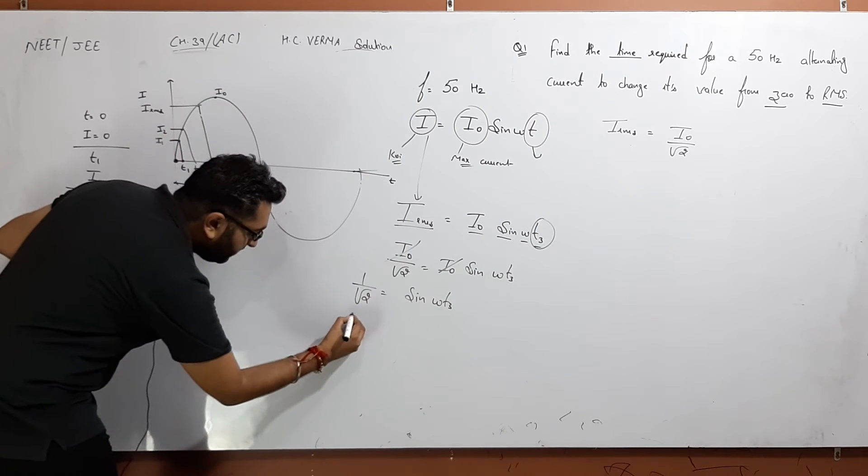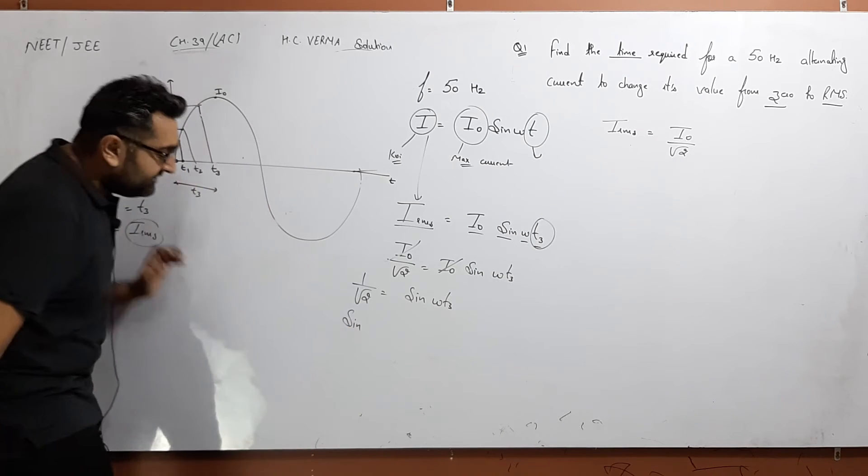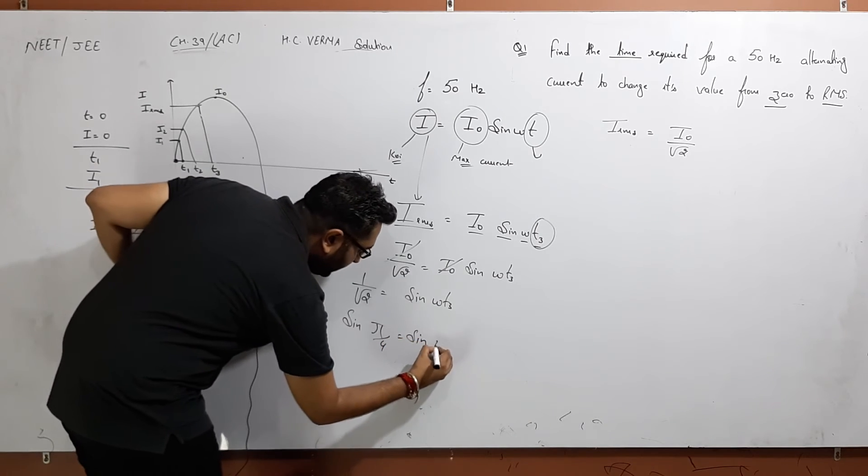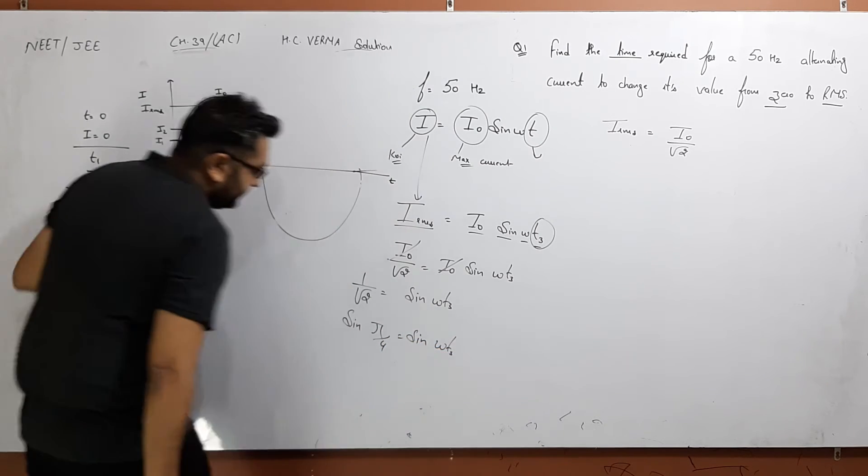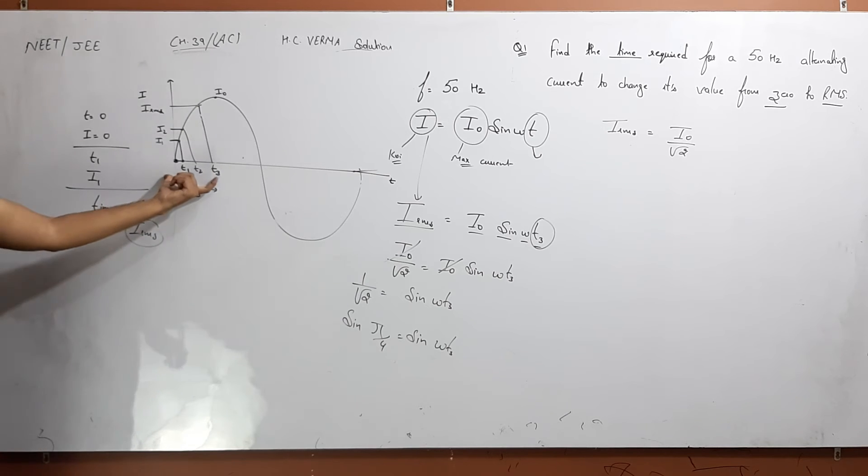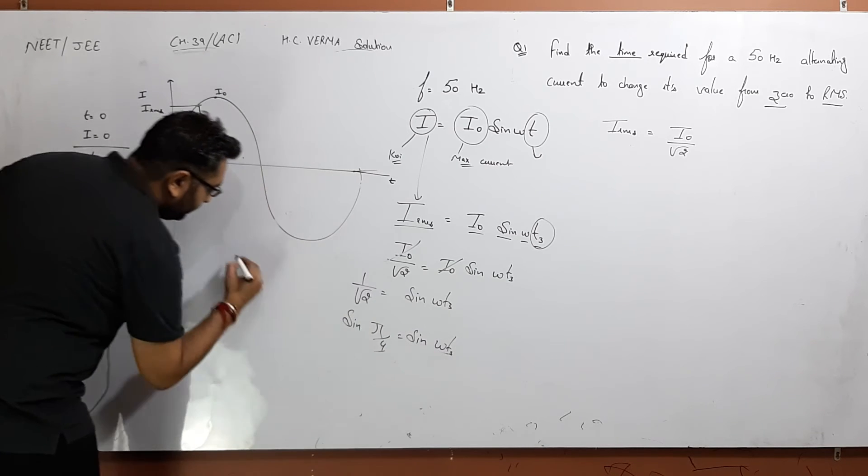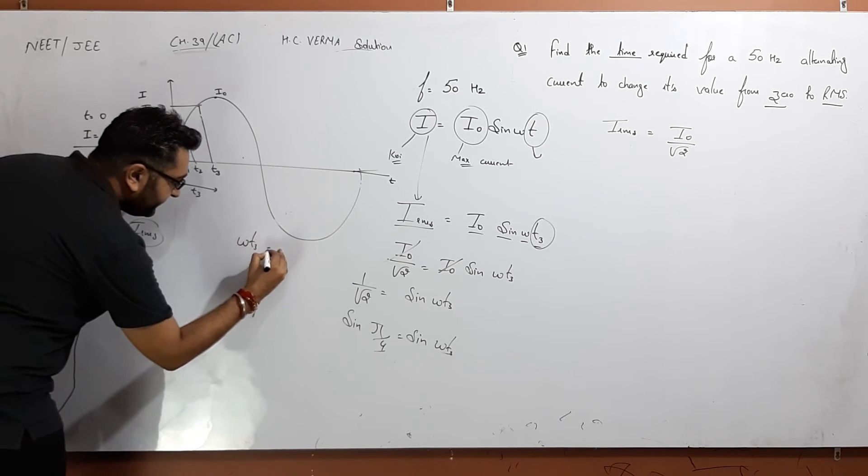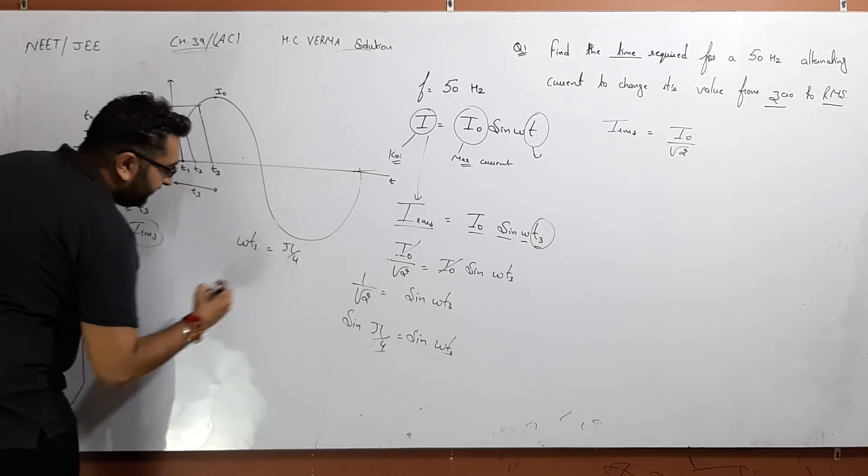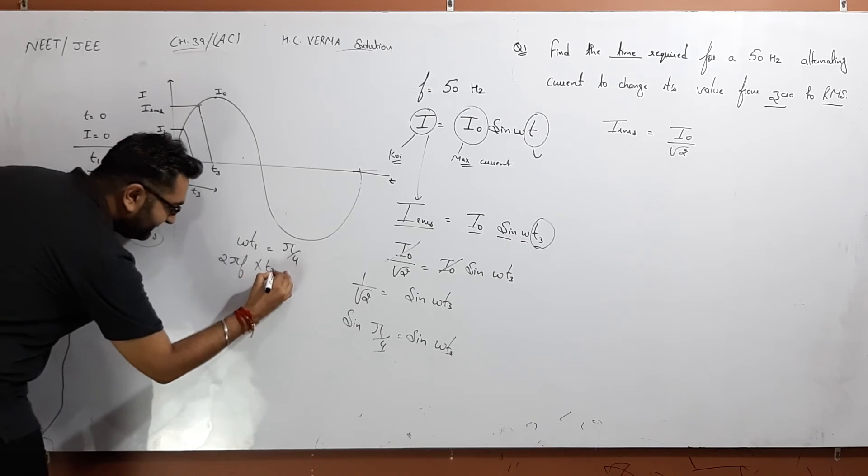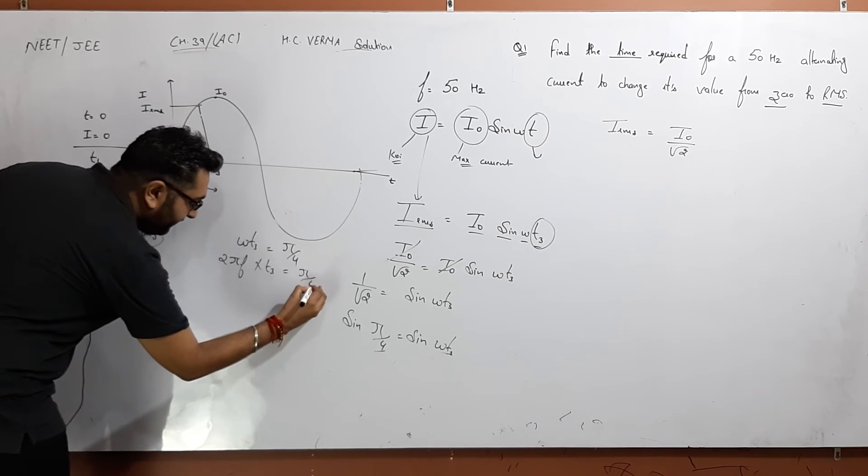And 1 by root 2 is sin 45 degrees. Sin 45, which is pi by 4, is equal to sin omega T3. T3 is the time interval for IRMS. Now I compare: omega T3 is equal to pi by 4.